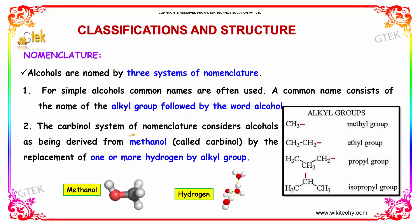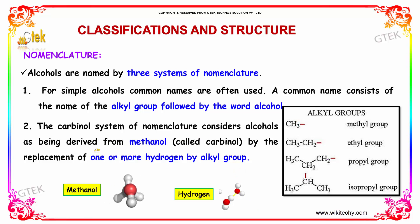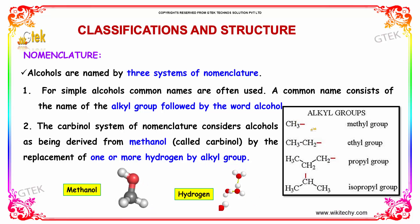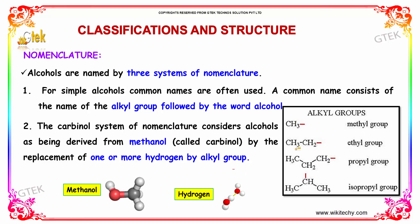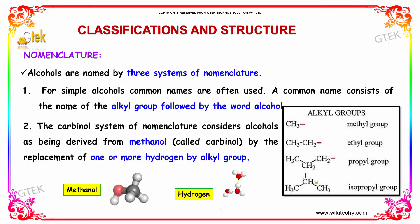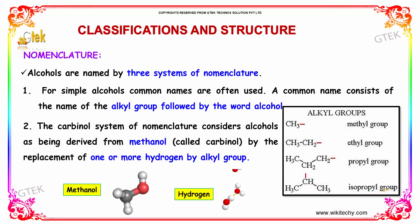The carbinol system of nomenclature considers alcohols as being derived from methanol by the replacement of one or more hydrogens by an alkyl group. The name of CH3 is known as methyl group, CH3CH2 is known as ethyl, CH3CH2CH2 is propyl, and similarly CH3CHCH3 is known as isopropyl.